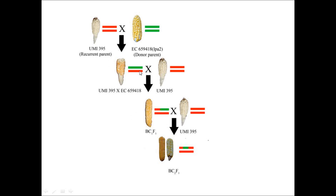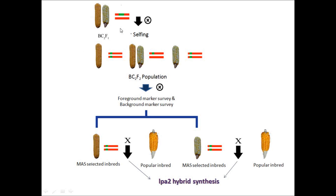The selection of plants was done using SSR markers. After this, selfing is done between the cobs of the BC2F1, and the segregating progenies homozygous for the LPA2 region using the foreground markers were selected. Selected progenies were tested using the background markers to recover the maximum of the parental genome. These marker-assisted selected inbreds can then be used for the LPA2 hybrid synthesis by crossing them with popular inbreds to increase vigour in the obtained hybrid.